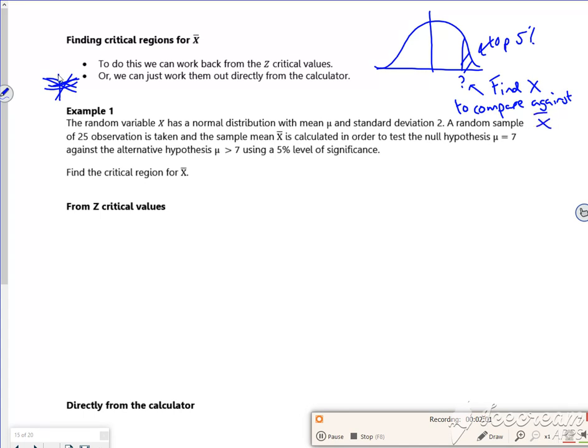So it says a random variable X has a normal distribution with a mean mu, standard deviation of 2, a random sample of 25 observations taken, X bar's calculated. So mu is 7. So I've got X follows a normal distribution of 7, 2 squared, leading to a sample of a normal distribution with 7, 2 squared over 25. So my sample standard deviation will be 2 over 5, 0.4, which is where I read it.